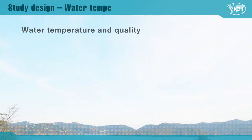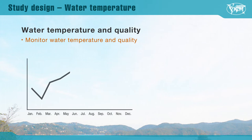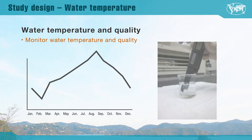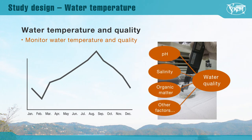Water temperature is critical for the residue depletion rate in fish and must be monitored at least daily. Water temperature has seasonal differences, and thus the residue study should be done under the temperature of the worst-case scenario. Water quality is also important. Water quality parameters must be monitored at appropriate intervals, and water should be exchanged at a rate suitable to maintain the good health and welfare of the fish species.